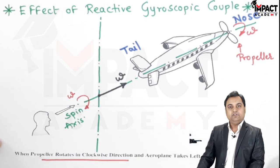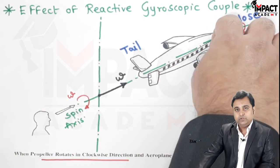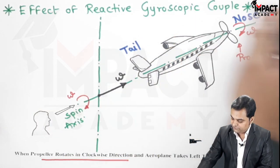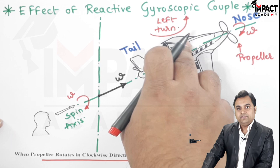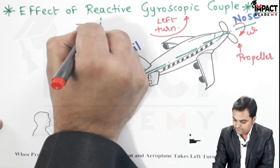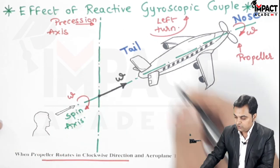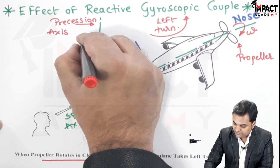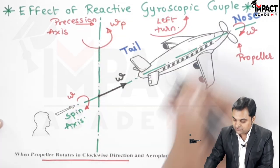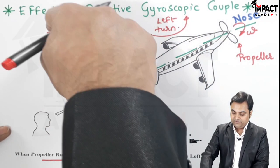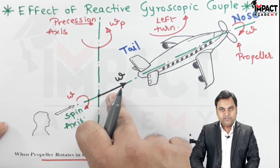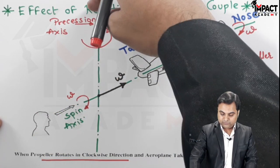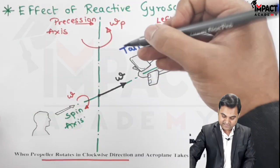The plane is taking a left turn. Imagine you are sitting in the plane and it is taking a left turn, going in this direction. It is rotating about a vertical axis called the precession axis. Looking from the top, this precessional velocity is in anti-clockwise direction. The angular velocity vector Omega of the propeller is tilted in the anti-clockwise direction corresponding to the precessional velocity by 90 degrees, giving the active gyroscopic couple.